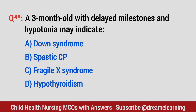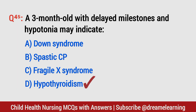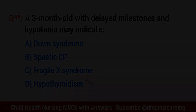Question number 45. A three-month-old with delayed milestones and hypotonia may indicate? The right option is D: hypothyroidism.